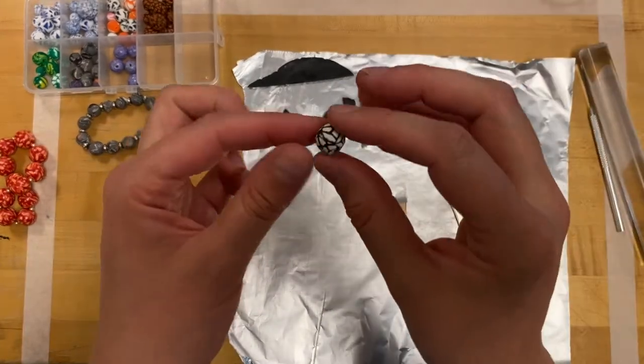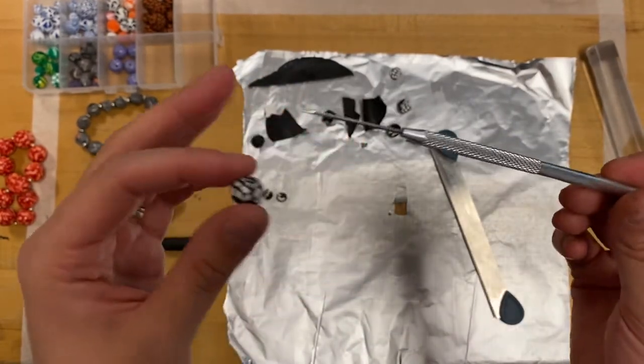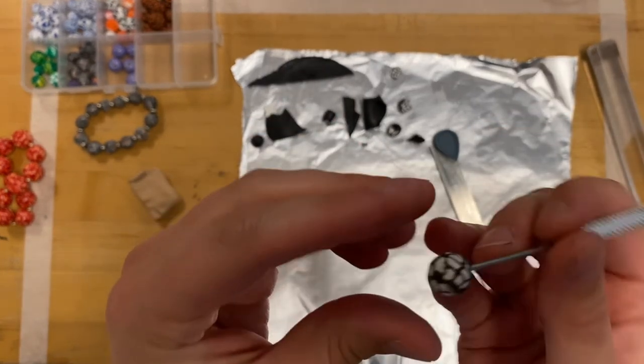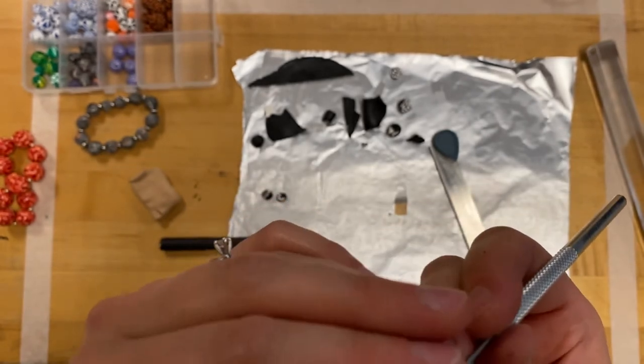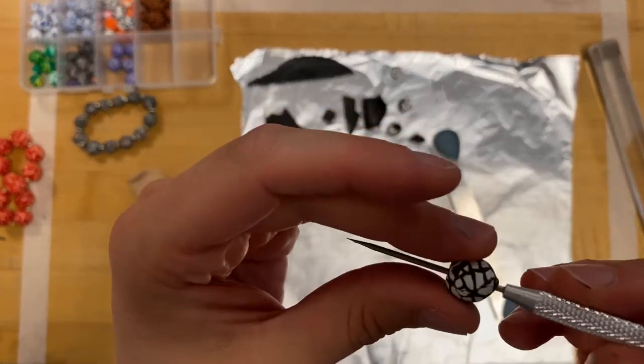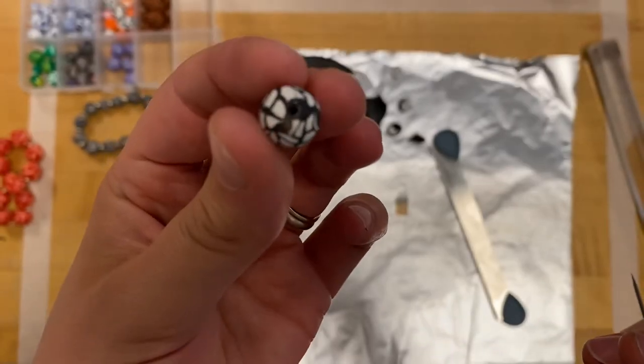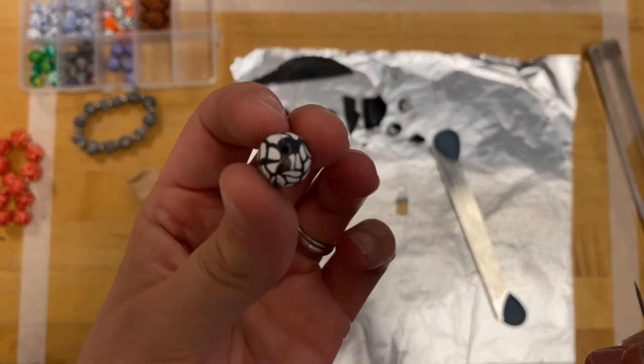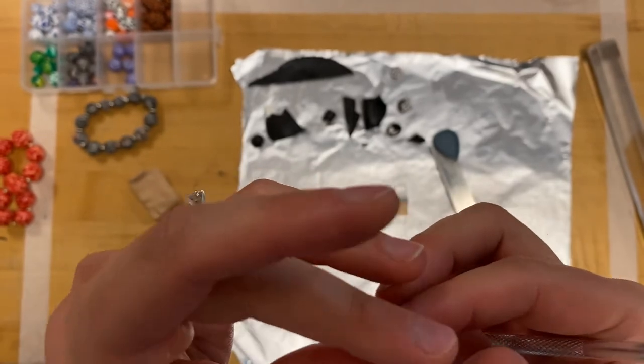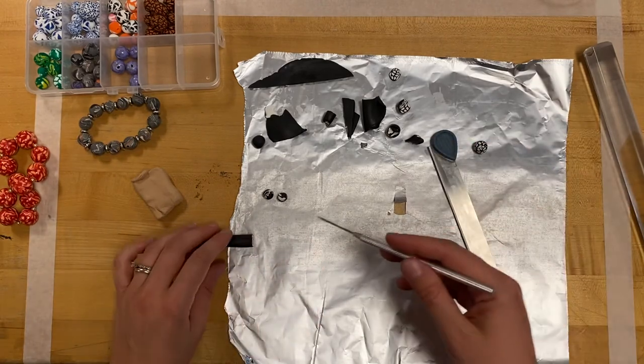Once you have your beads made, you have all 15, you then need to take your pin tool and you need to stab through the center as best as you can, find the center of your bead. Go through the bead one way and then go back through the other side the opposite way, so that you can make a hole in that bead all the way through. And you're trying to keep it as round and bead-like as possible.